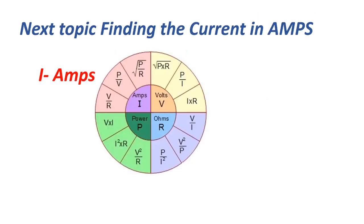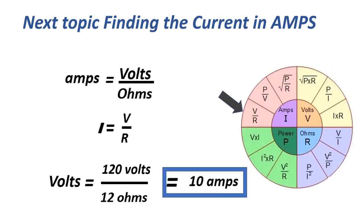The next topic is finding the formula for current. Amps equals volts over ohms, or I equals V over R, equals 120 volts over 12 ohms, equals 10 amps.